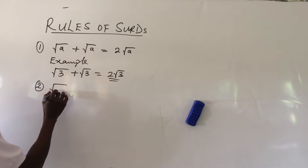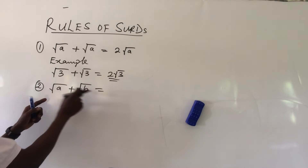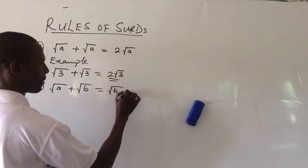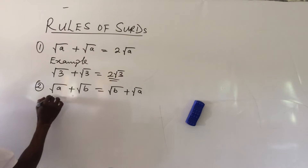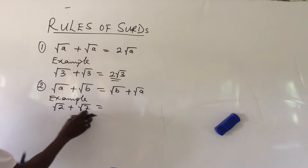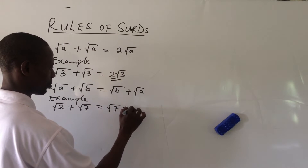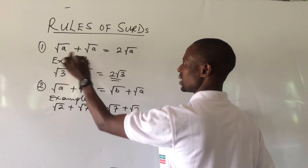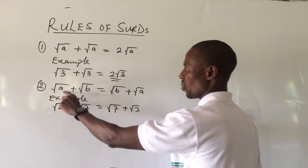Rule number two is similar but applies when you have root a plus root b, where they carry different quantities inside. You cannot add them; you can only interchange their positions, giving root b plus root a. For example, root two plus root seven cannot be added — you can only rewrite it as root seven plus root two.